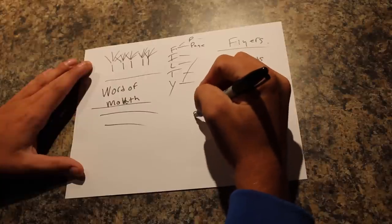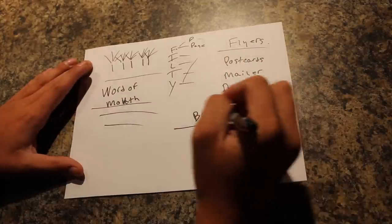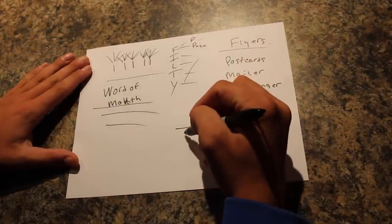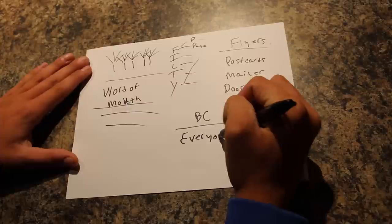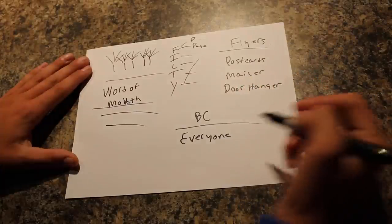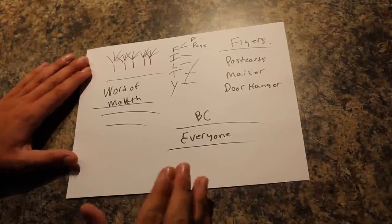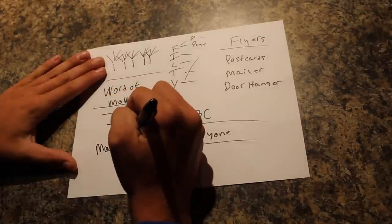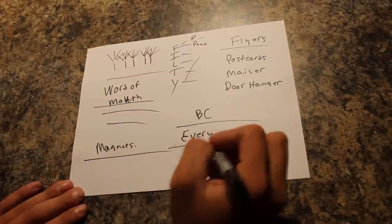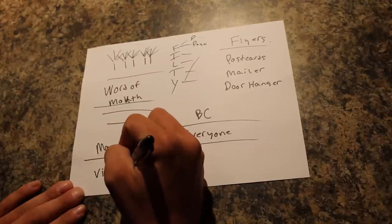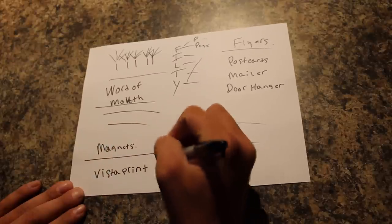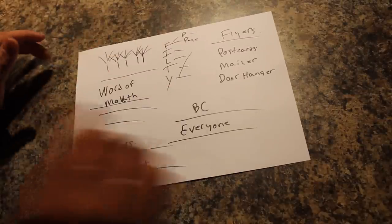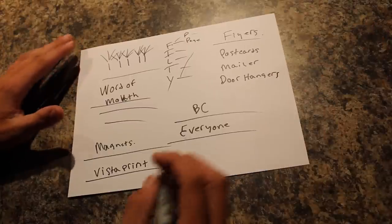And then a huge one is business cards right here. Just have a ton of them, have them in your pocket all the time. Anybody you meet, everyone should have one, everyone should have one of your business cards, have a way to get a hold of you. Magnets, you can go on sites like Vistaprint and get all of this stuff. You get little promotional items, you can get magnets, business cards, mailers, door hangers, postcards.